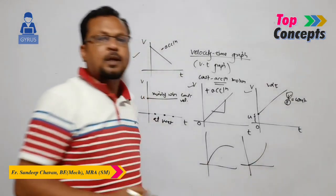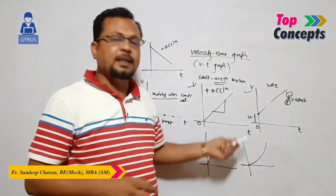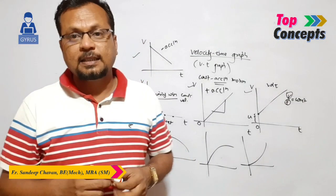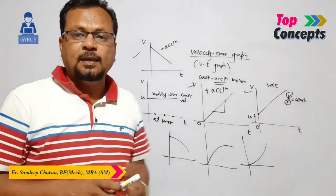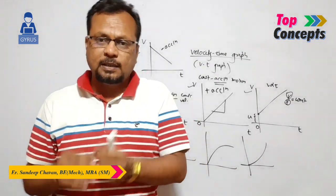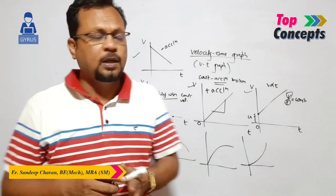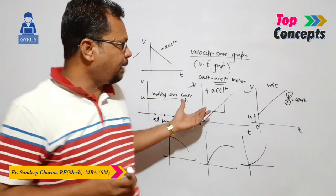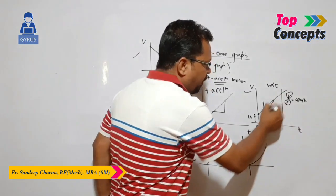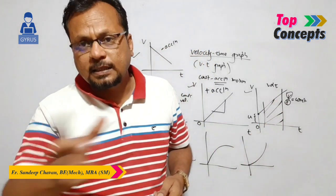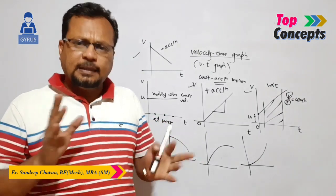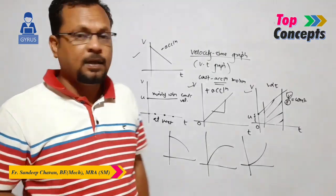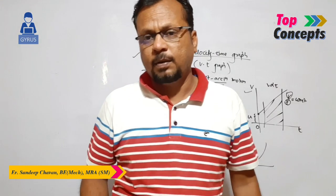If velocity is increasing or decreasing with respect to time but its acceleration is not constant, this graph indicates variable acceleration motion — the velocity is changing and so the acceleration is changing. One extra important point: to calculate the area under the velocity time graph from one point to another gives the distance covered by the particle during that time interval. This is the basic interpretation of the velocity time graph — the top concept of V-T graphs.